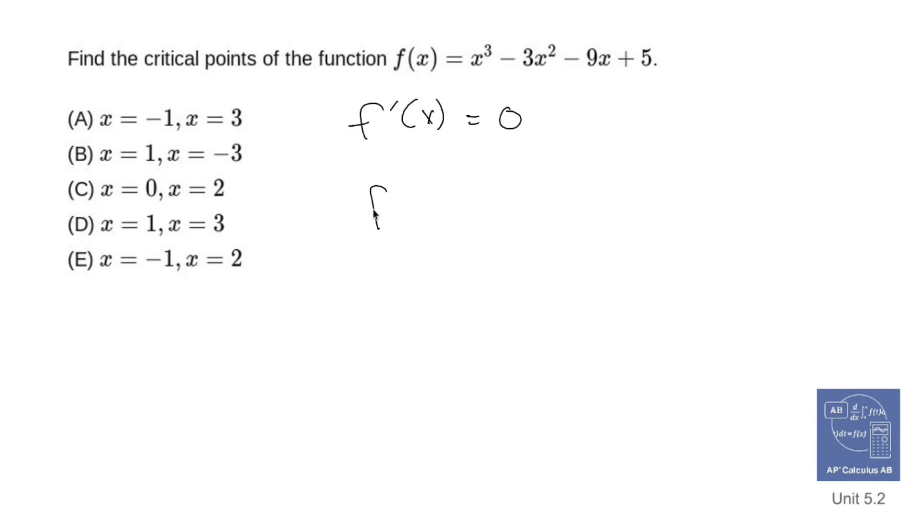So f prime of x is going to be power rule 3x squared, power rule minus 6x, power rule minus 9. Set that equal to 0.